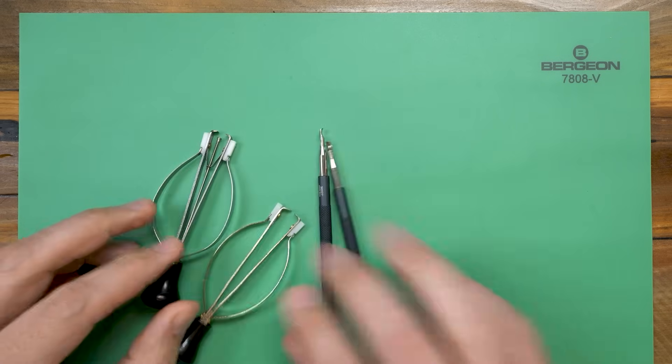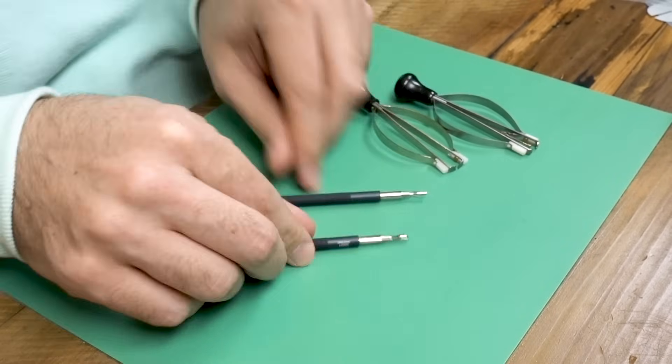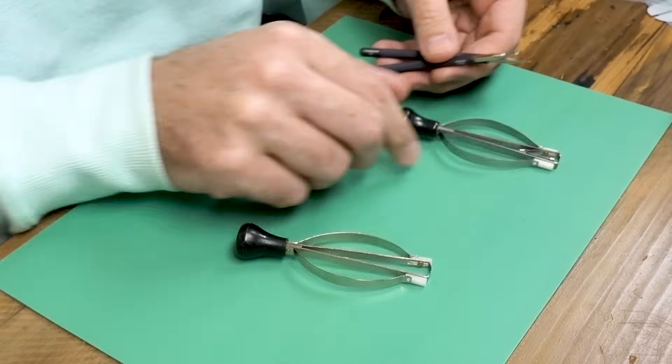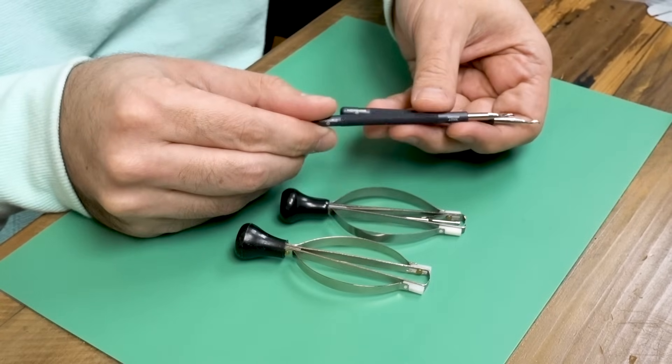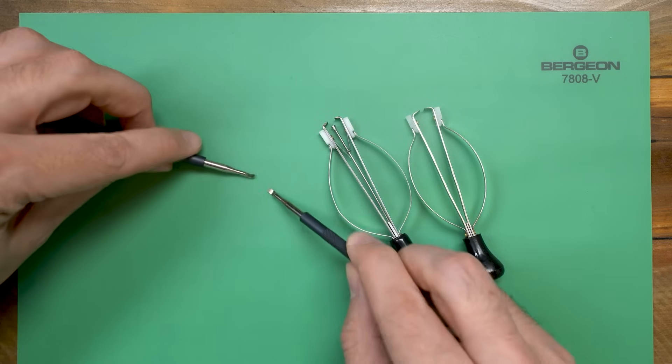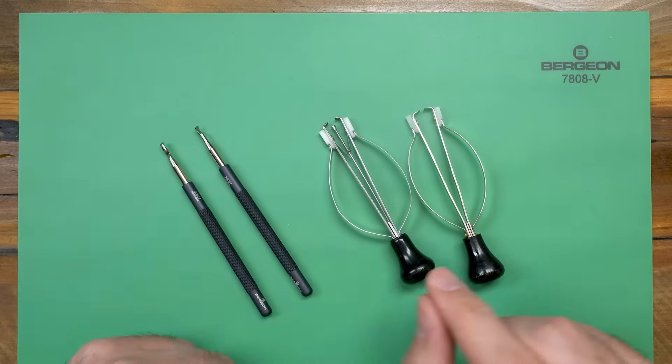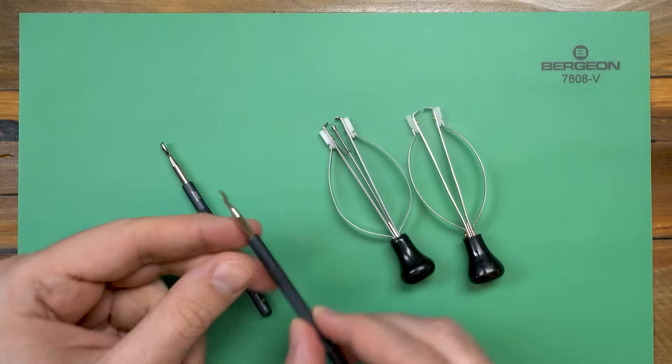Next, you'll need a way to get the hands off of the watch. There are two main ways to do this. Hand levers or a Presto tool. Hand levers are my preferred way. You can get a variety of high quality ones from Bergeon or Horatec for about fifty seven dollars or generic ones for fifteen dollars. I would go for the Bergeon ones if you can afford it, as you really don't want to scratch the dial of your watch.